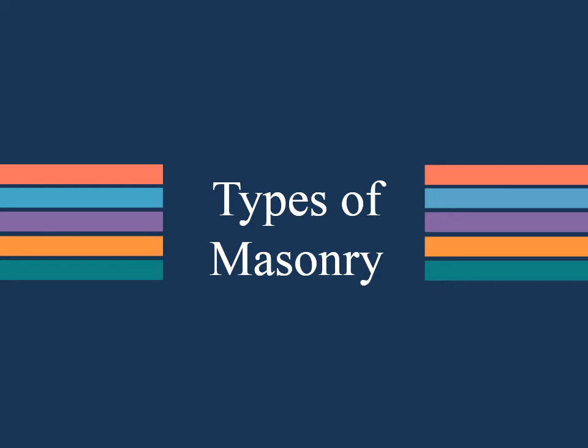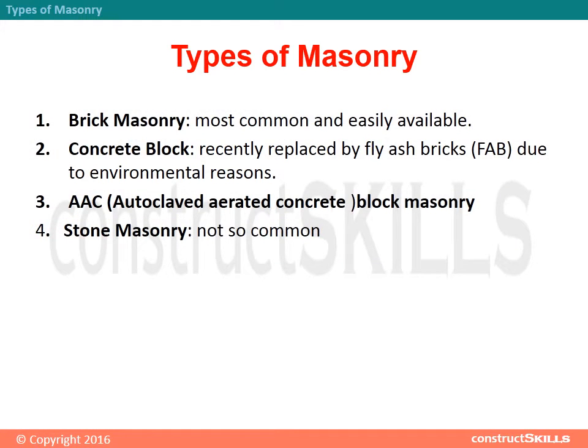Types of masonry. Brick masonry is the most common and easily available. Concrete block has recently been replaced by fly ash bricks due to environmental reasons. AAC, or Autoclaved Aerated Concrete block masonry, is another type. Stone masonry is also used, though not so common.